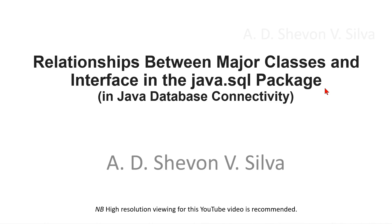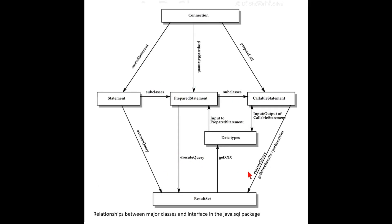Relationships between major classes and interfaces in the java.sql package in Java Database Connectivity. The JDBC API is contained in the package java.sql. The main classes and interfaces in java.sql are listed here.